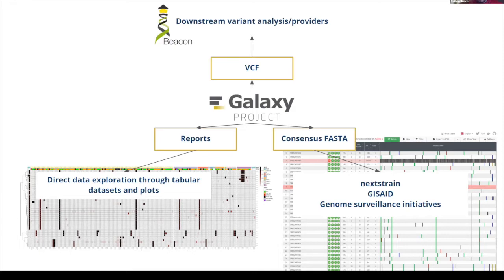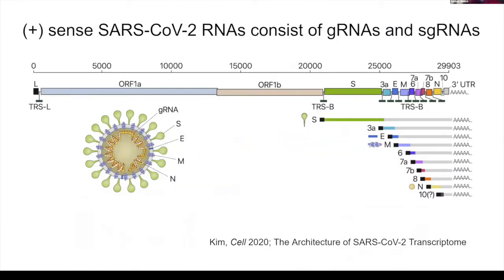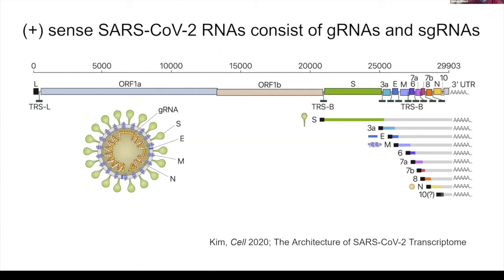There are other things we might want to do with long reads. In particular, we might be interested in looking at the transcriptome of SARS-CoV-2. One of the things we might be interested in is looking at genomic versus subgenomic RNAs, and being able to bin the reads into which subgenomic RNA we think they came from.